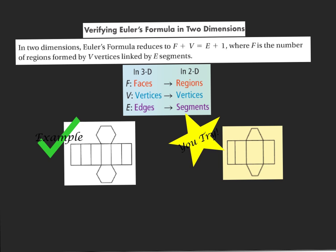Now we're going to verify Euler's formula in two dimensions. In two dimensions, Euler's formula reduces to F plus V equals E plus 1, where F is the number of regions formed by V vertices linked by E segments. Notice the difference: it's plus 1 for two dimensions and plus 2 for a three-dimensional figure.